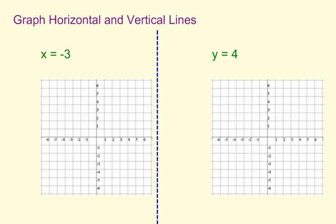Graphing horizontal and vertical lines - these are really easy to mix up. So we want to make sure that we keep this very straight, and when we see x equals negative 3 or y equals 4, that we are positive whether it should be a horizontal or a vertical line.